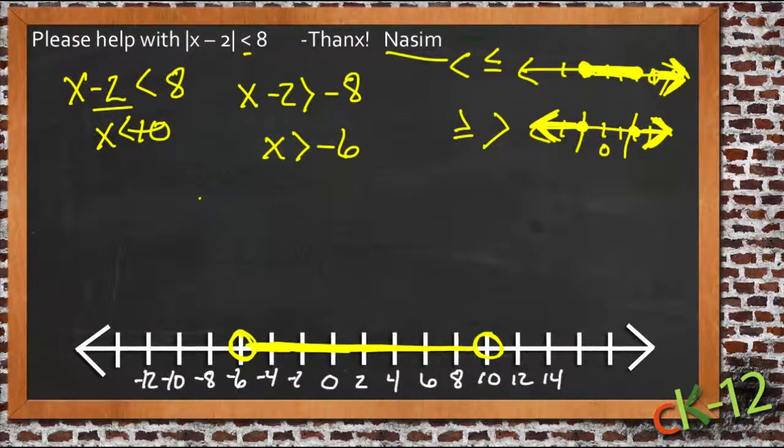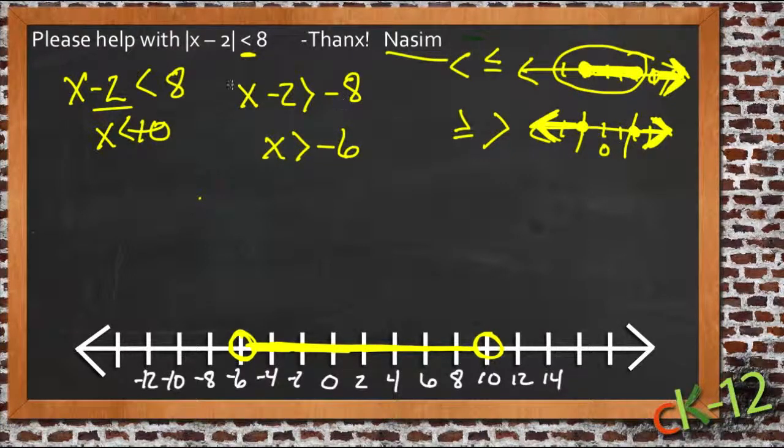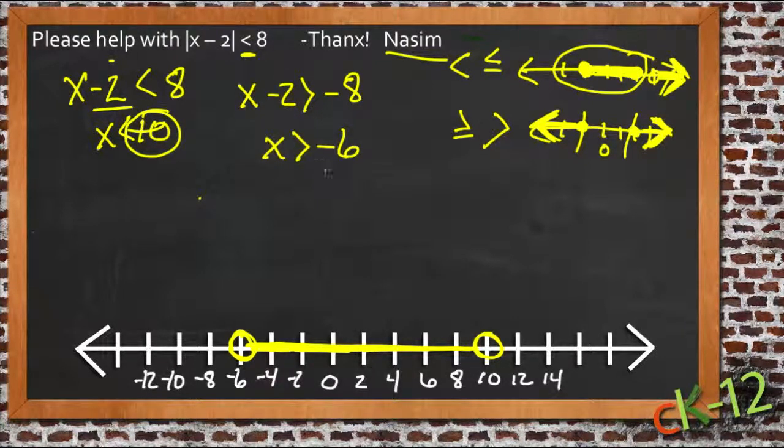And to find that, we just identified first of all that this was a less than or a less than or equal to, so we knew it was going to be a range of values that included and wasn't going in both directions. And then we just had to find the two numbers that represented the biggest value it could be, in this case 10, and the smallest, the most negative value it could be, in this case negative 6, and then shade all the numbers in between.